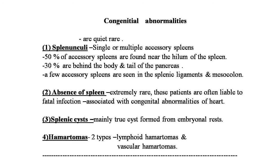Patients with absent spleen are often liable to fatal infections associated with congenital abnormalities of the heart. The third congenital abnormality is splenic cysts, mainly true cysts from embryonal rests. The fourth is hematomas of the spleen, which are of two types: lymphoid hematomas and vascular hematomas.